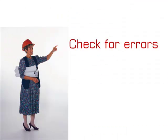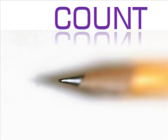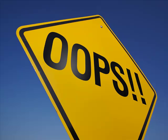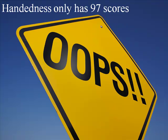If we put our data table into a computer spreadsheet, we can have the computer check for errors. A good way to do this is to have the computer count how many scores are in each column — there should be 100 in each. Let's assume the count values were 100, 100, and 97. That would indicate something is wrong. Checking, we discovered that there are 100 ID numbers and 100 IQs, but the handedness column only has 97 entries.